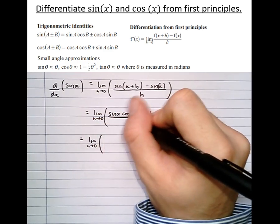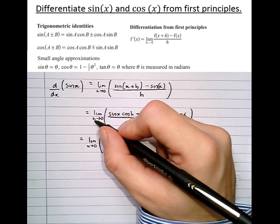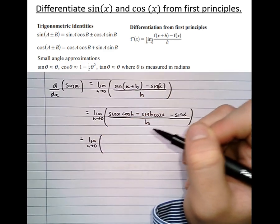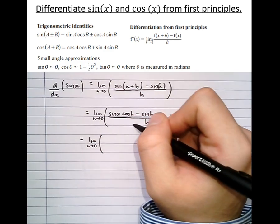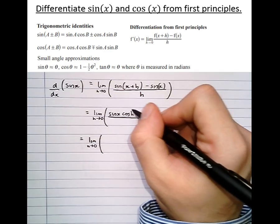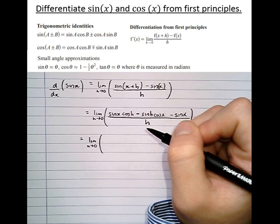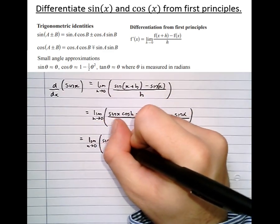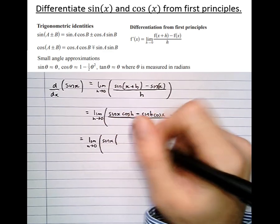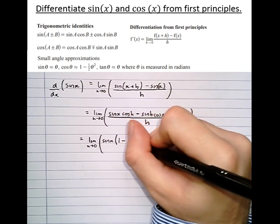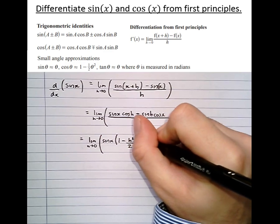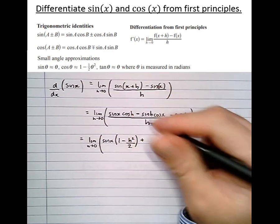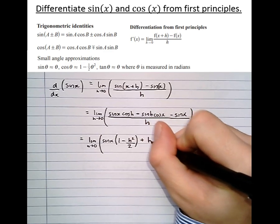Looking at this, h is approaching 0, that means h must be small. Because h is small we can apply the small angle approximations to all of these trig terms involving h. So cos h becomes 1 minus h squared over 2, and sin h when h is small becomes h.